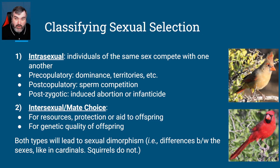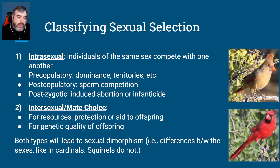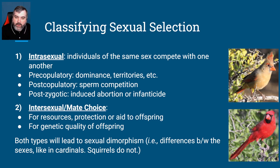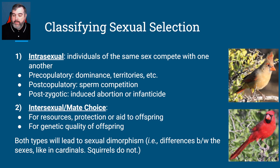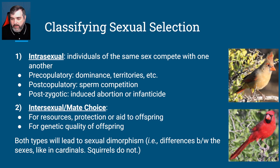Dimorphism — 'di' means two, 'morph' means form or type — so two forms. Cardinals are a great example, and we see them around here in North Carolina. The female cardinal at the top is kind of drab, not brightly plumed, whereas the male is very bright red and striking. People love pictures of cardinals in a snowy pine tree because that red against white is so stark — and the fact that he survives in that environment advertises to the female that he is a good male who has been able to outcompete others.